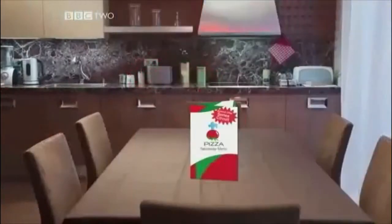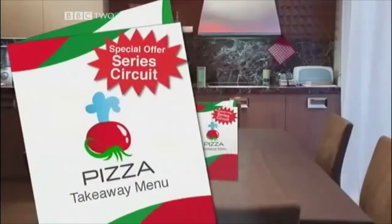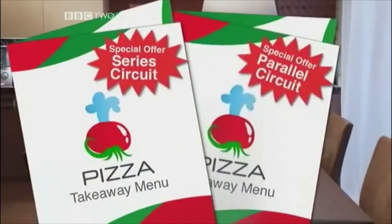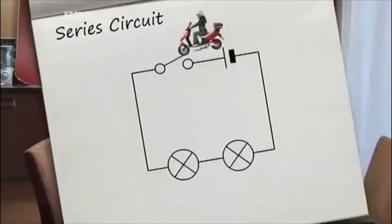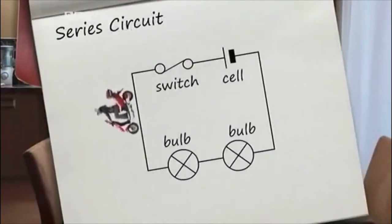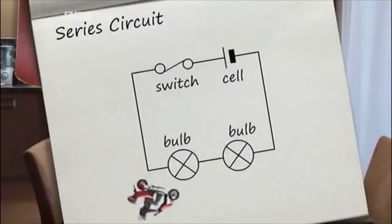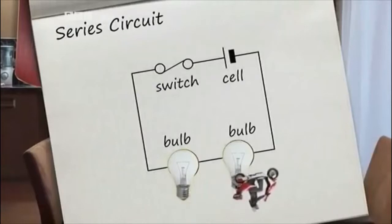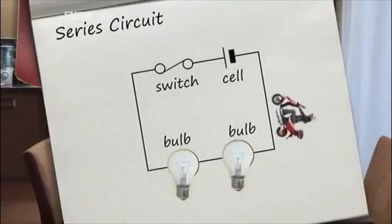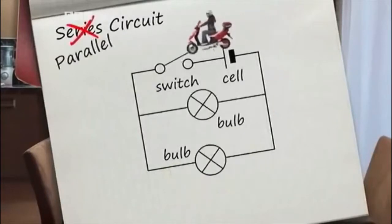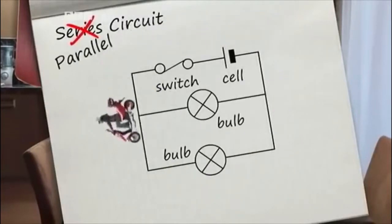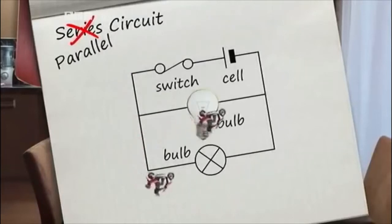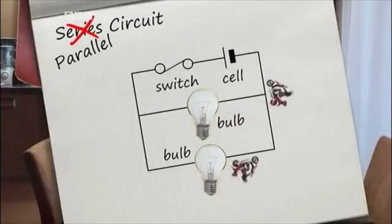Circuits come in two variations: series and parallel. But what's the difference? In a series circuit, there is only one possible route for current to get from one side of the cell to another. In a parallel circuit, it can take more than one route — it can go through this bulb, or through this one.